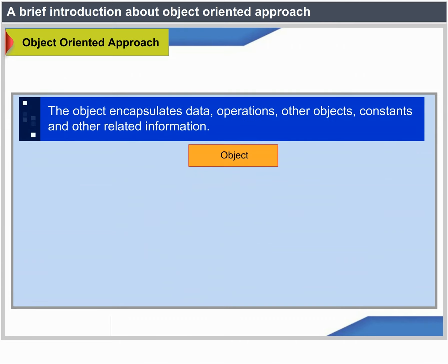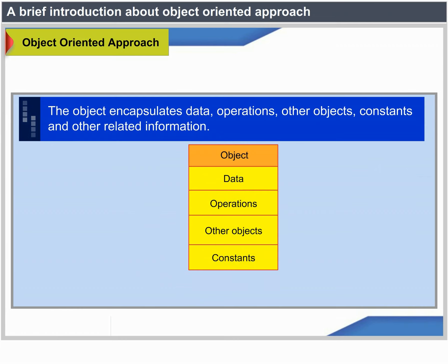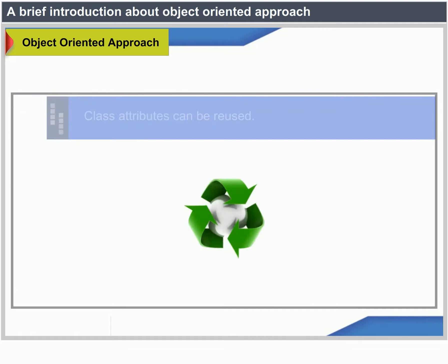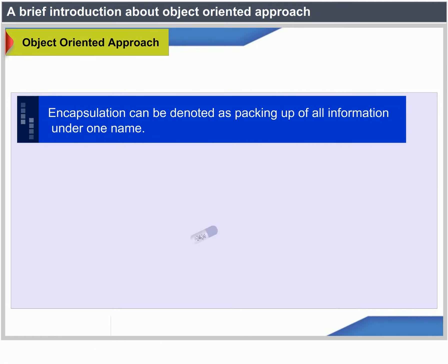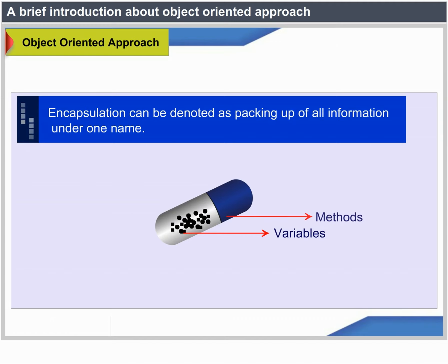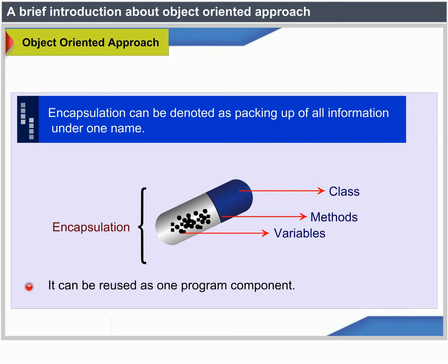The object encapsulates data, operations, other objects, constants and other related information. Class attributes can be reused. Encapsulation means that all of this information is packaged under one name and it can be reused as one program component.